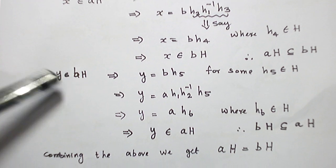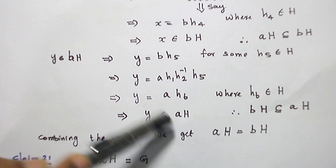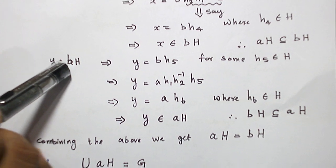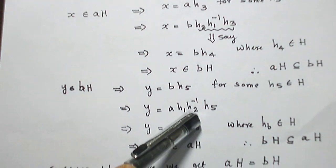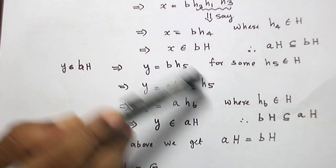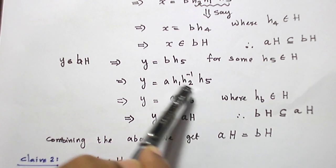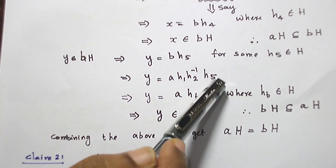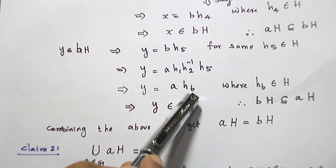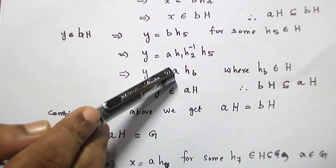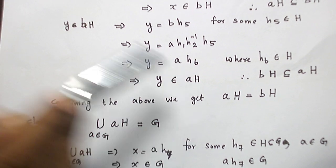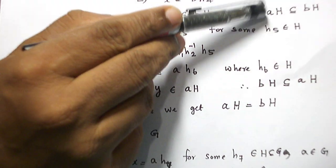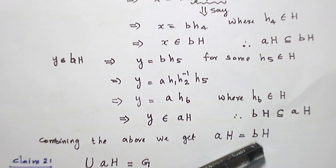Similarly, I can prove BH is a subset of AH. I take an element in BH of the form B·H₅. Since B = A·H₁·H₂⁻¹, substituting and taking the product H₁·H₂⁻¹·H₅ as an element H₆ in H, it takes the form A·H, so it is in the left coset AH. Therefore BH ⊆ AH. Combining both, AH = BH.